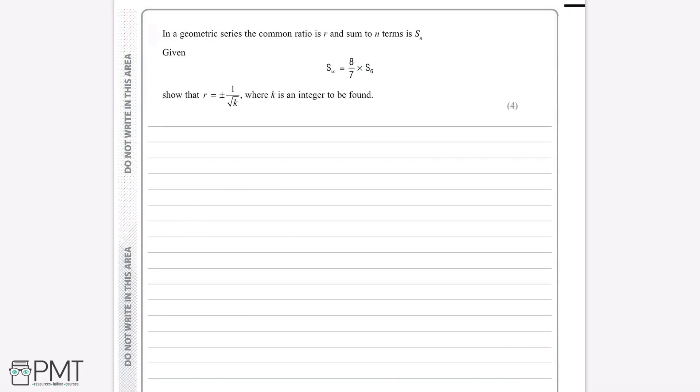In a geometric series, the common ratio is r and the sum to n terms is Sn. Given that the sum to infinity is equal to 8 over 7 multiplied by the sum of the first six terms, show that r is equal to plus or minus 1 over root k, where k is an integer to be found.